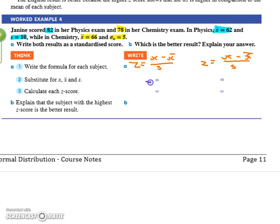So we've got z equals 82 minus 62 over 10. So that's 20 over 10, which is 2. Then we have 78 minus 66 over 5. So what'd you get for that? It's 12, 12 over 5 is 2.4.